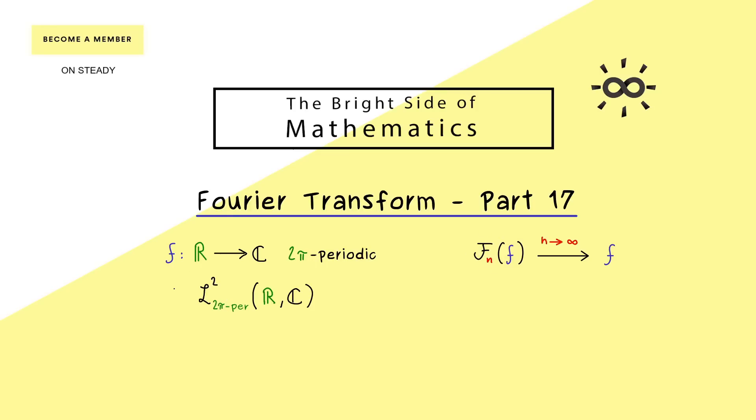The only requirement we choose here is that our function f is an L² function. This means over one period the function is square integrable. We have already proven that our Fourier series converges to f with respect to the given L² norm.